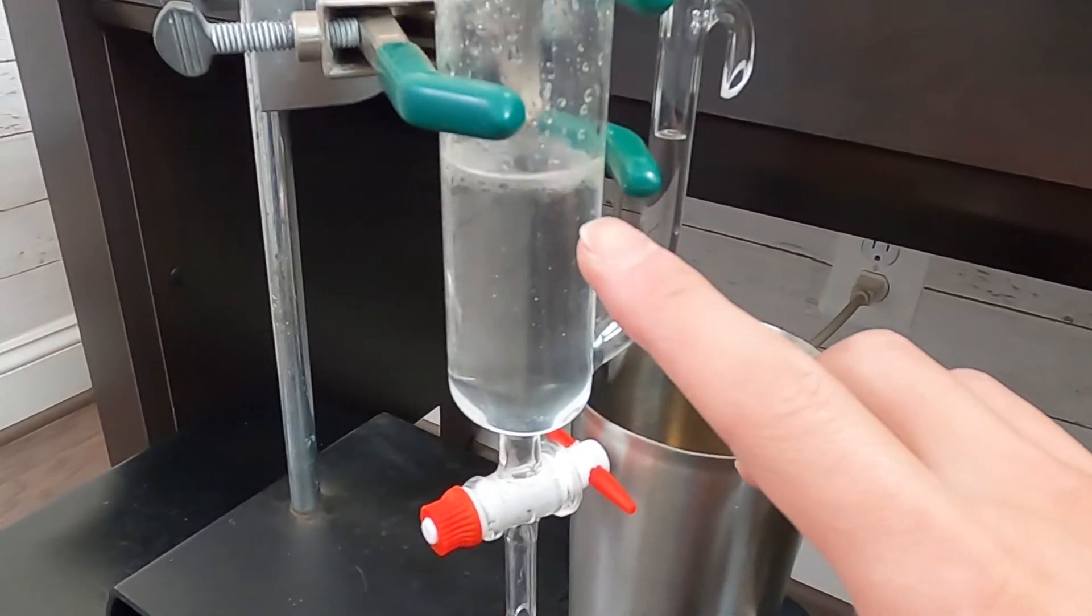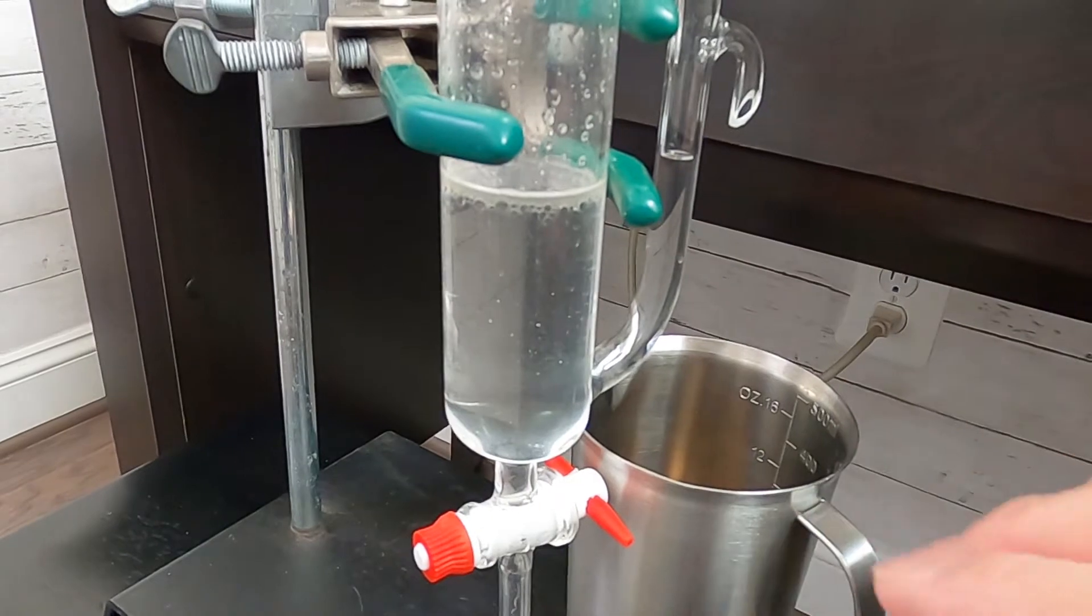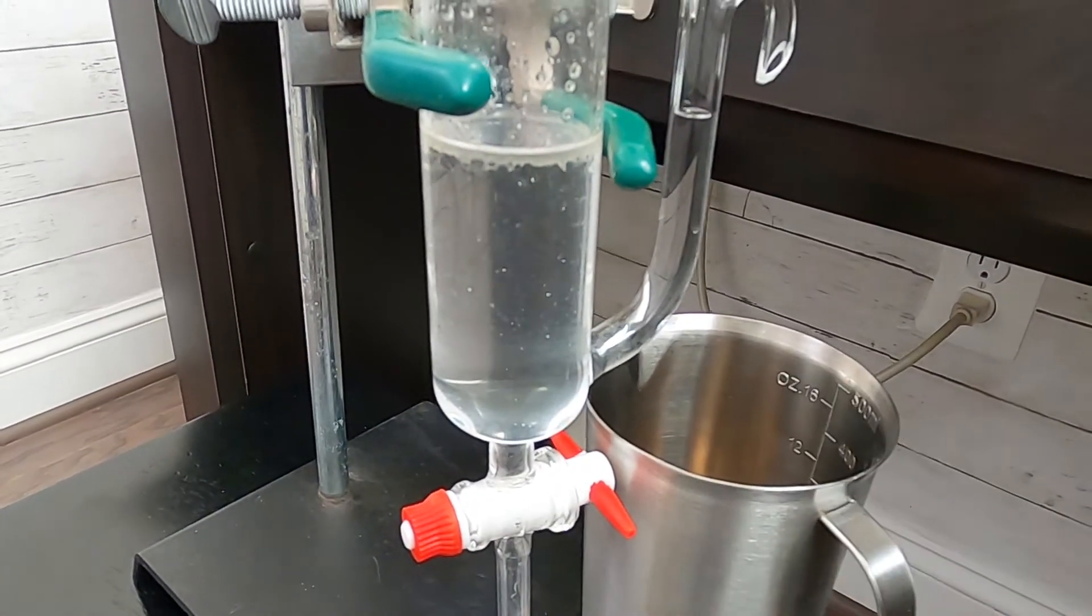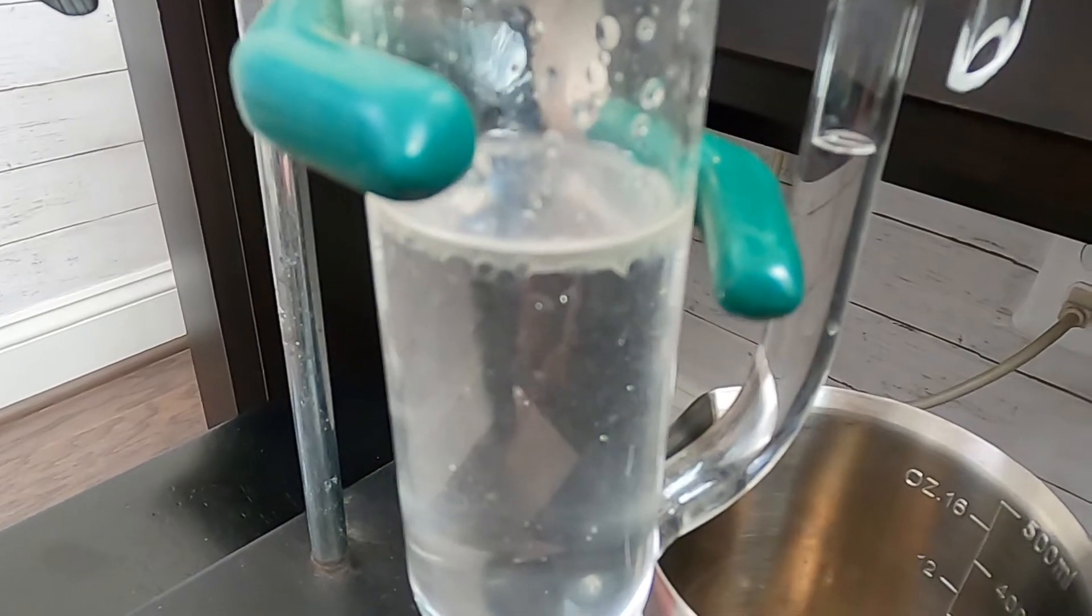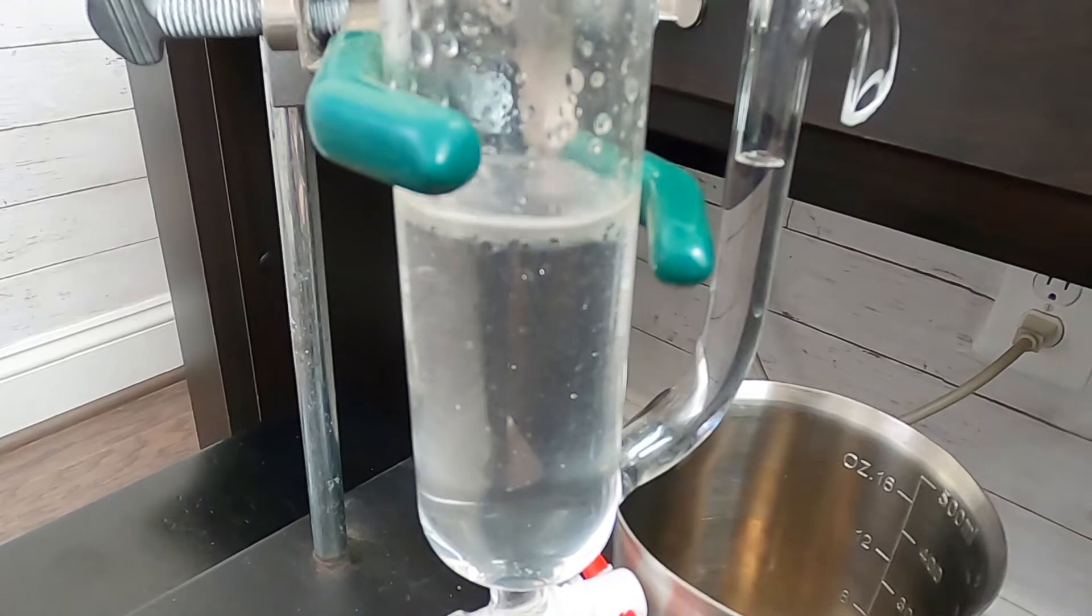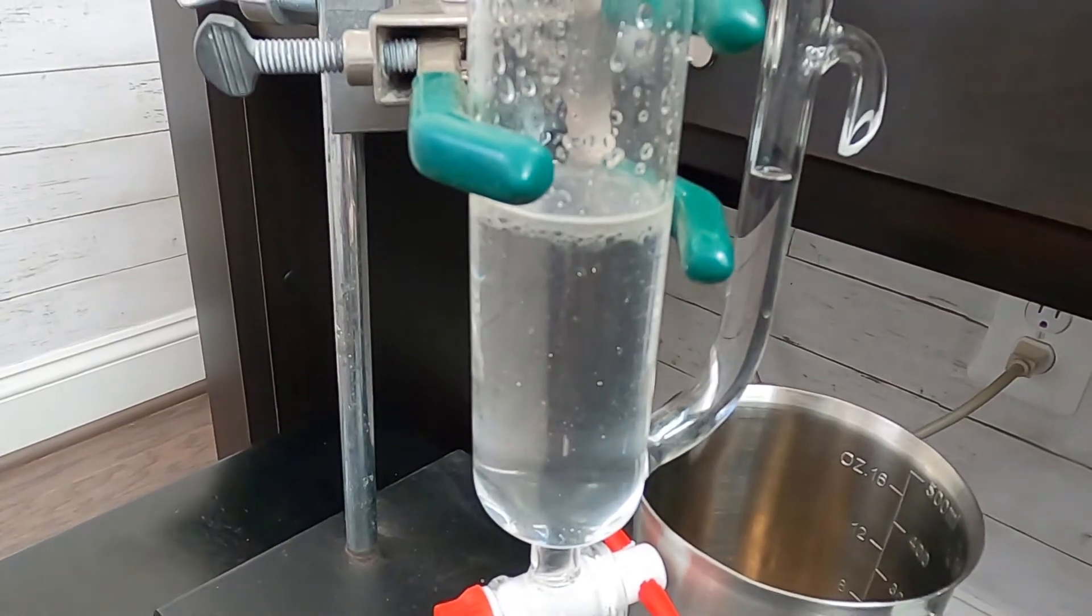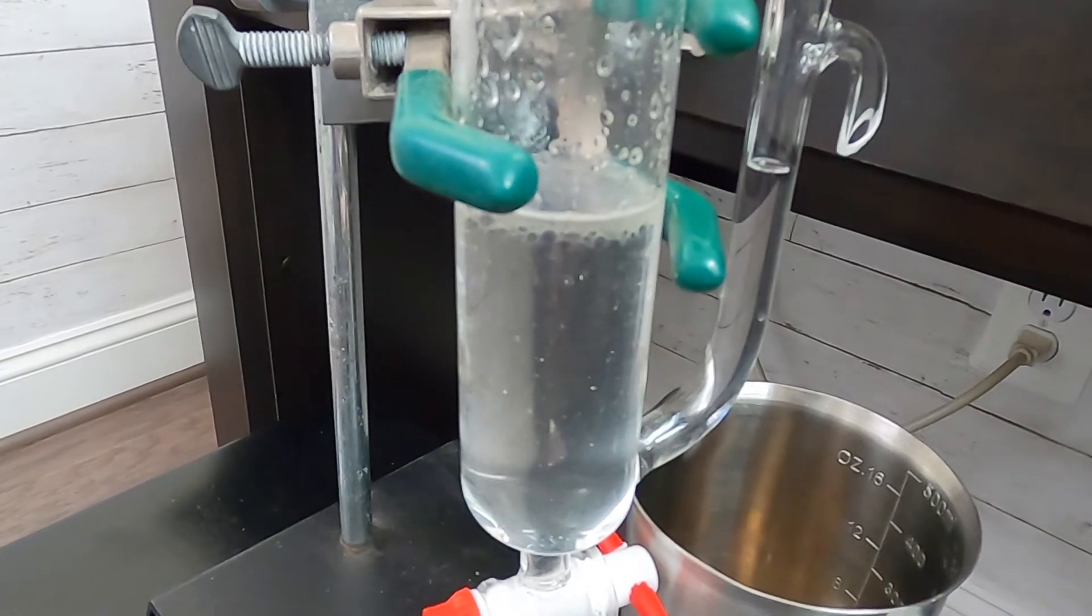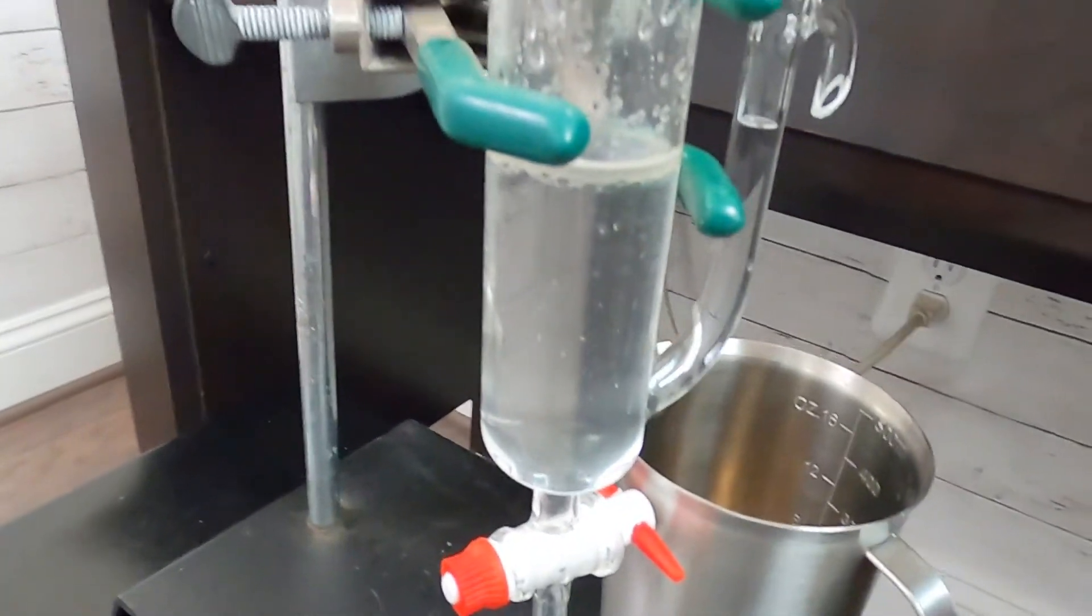So you can see the rosemary oil. It's clear, a little bit kind of white, a little bit like a white color. The different oil has a different color. Like a lavender has a little bit yellow. Ginger has a stronger yellow. Cinnamon has a little bit yellow. And rosemary is like white.